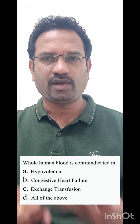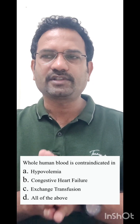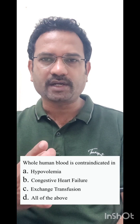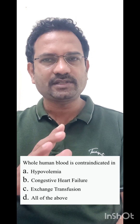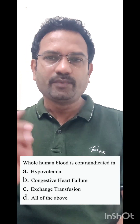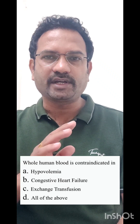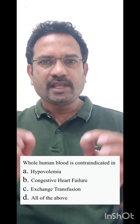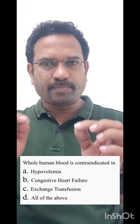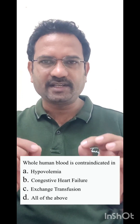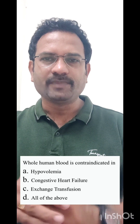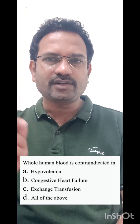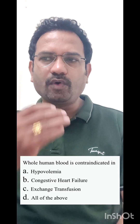Whole human blood contains blood taken from a donor; it contains plasma as well as blood cells. Now, in which condition is it contraindicated? The first option is hypovolemia — hypo means less, vol means volume, emia means blood — so hypovolemia means reduced blood volume. To treat reduced blood volume, the indication is giving whole human blood.